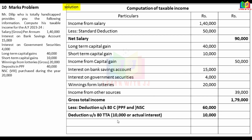Deductions: TTA (Section 80TTA) Rs.10,000. Since the assessee is totally handicapped, Section 80U deduction is Rs.1,25,000 (severe disability). PPF deposit Rs.40,000 and NSE purchase Rs.20,000 under Section 80C = Rs.60,000. Total deductions = Rs.10,000 + Rs.75,000 + Rs.60,000 = Rs.1,45,000. Taxable income = Rs.1,79,000 minus Rs.1,45,000 = Rs.34,000.